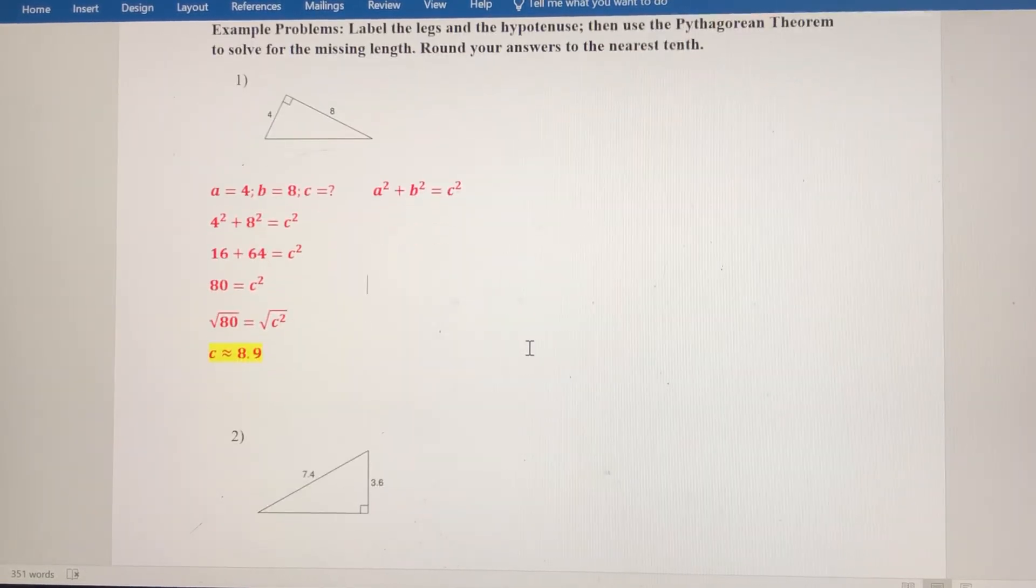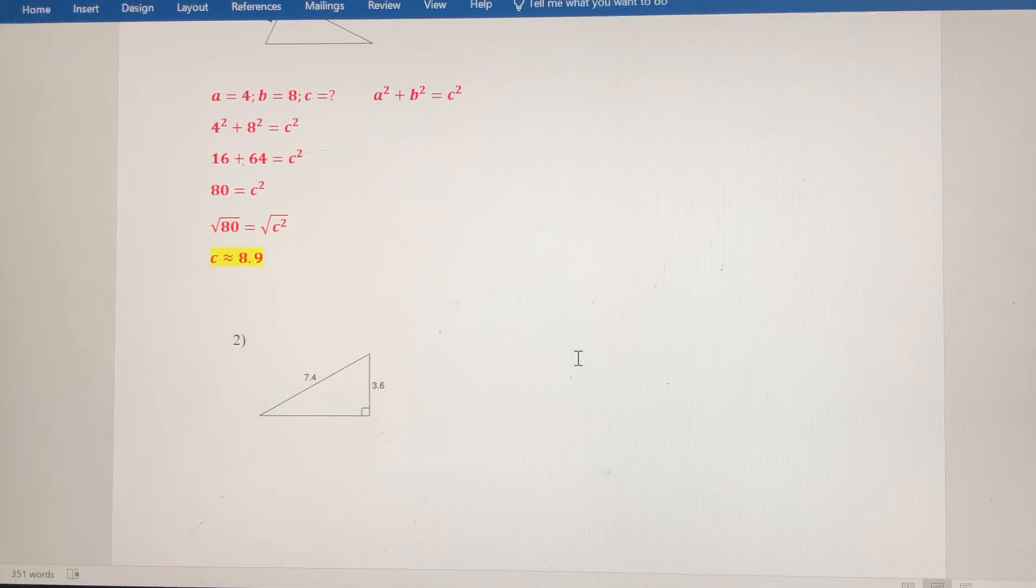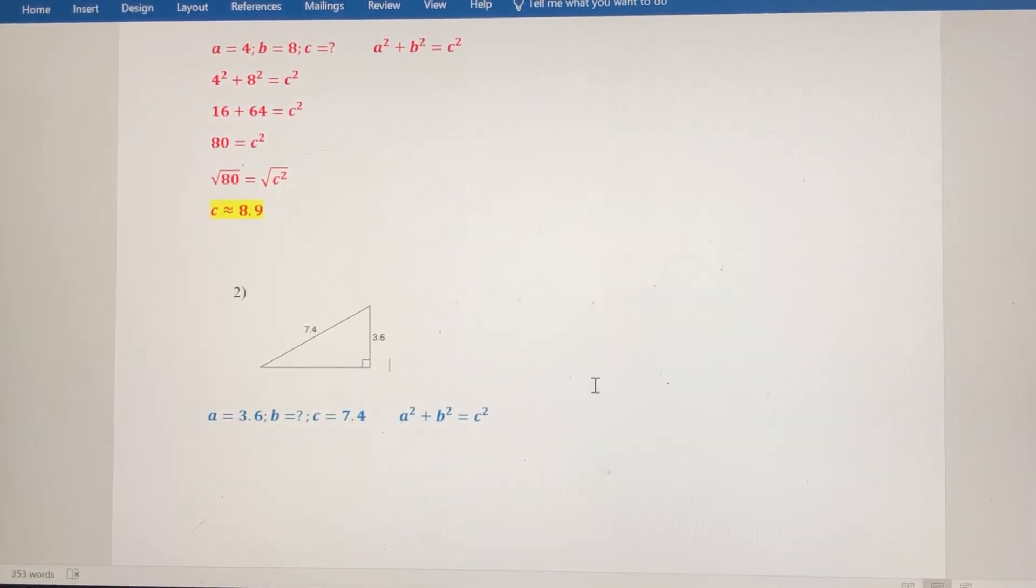Pause the video here. Try number two on your own. We're going to be solving for this leg, and then come back and check your work. All right, so I've decided to call this side b. I could call a question mark. I could call b = 3.6. It really doesn't matter. The important part is that c = 7.4. So I've decided that we're going to be solving for b here. Feel free to reverse those if you want to. So plug those values in. 3.6² + b² = 7.4². When I use my calculator, I get the following: 12.96 + b² = 54.76.